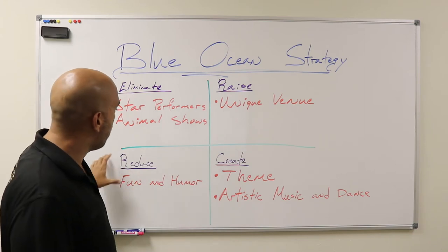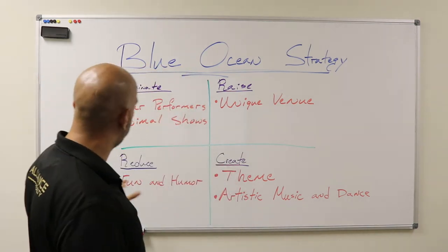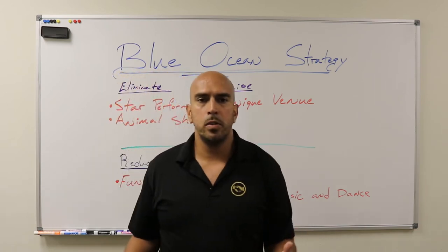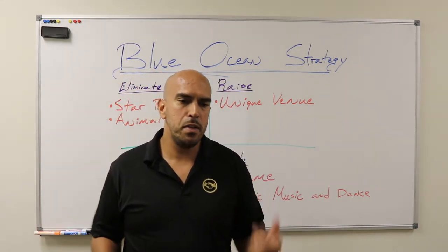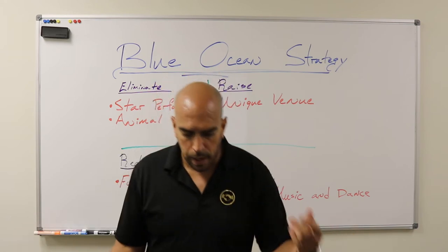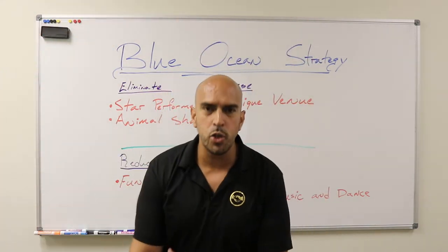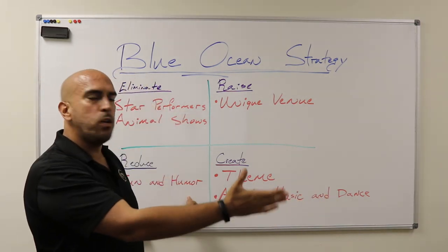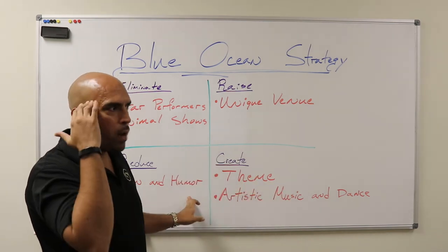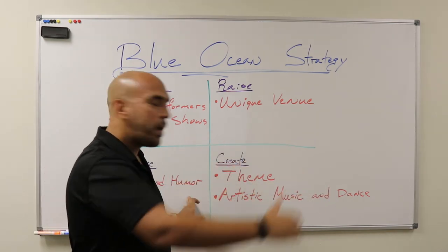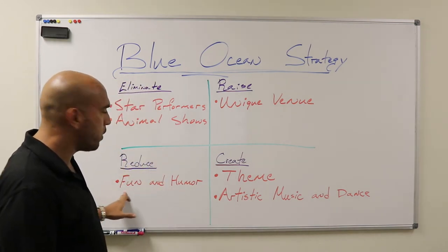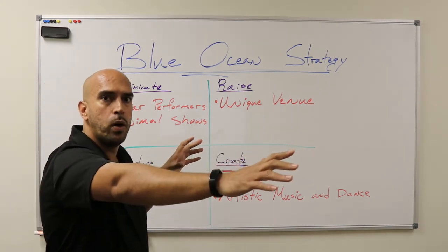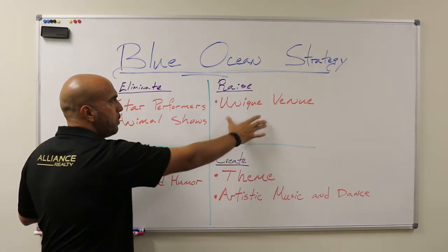So they eliminated star performers and animal shows. Now, the second step of the quadrant is what you need to reduce. Cirque du Soleil reduced the fun and humor. When you go to a normal circus, it's silly - it's more for kids, with clowns playing with little boys with big shoes and all that. They reduced that because they were aiming not just for kids as the audience - they wanted adults and the whole family too.